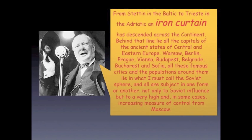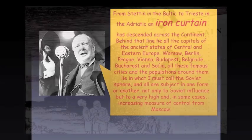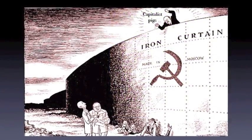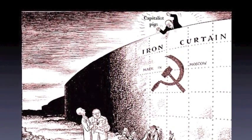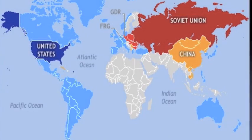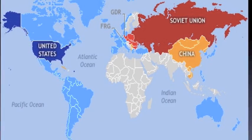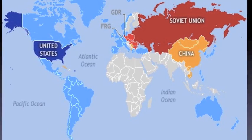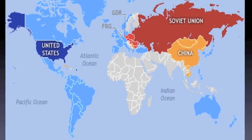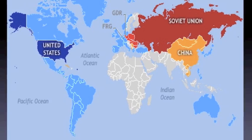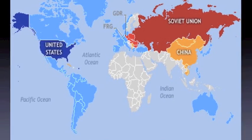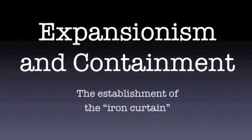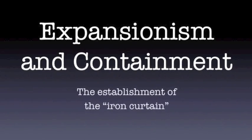As the conflict between the two superpowers solidified, we saw the establishment of the Iron Curtain. In the last lecture, we talked about how they were establishing those spheres of influence, not only in Europe, but around the world. That desire to spread your sphere of influence, or stop the spread of your opponent's sphere of influence, is known as expansionism or containment.